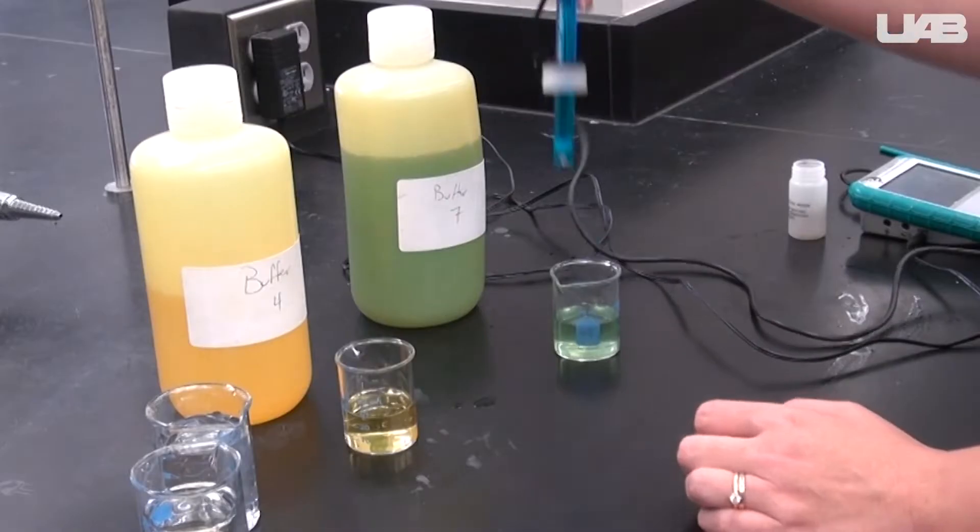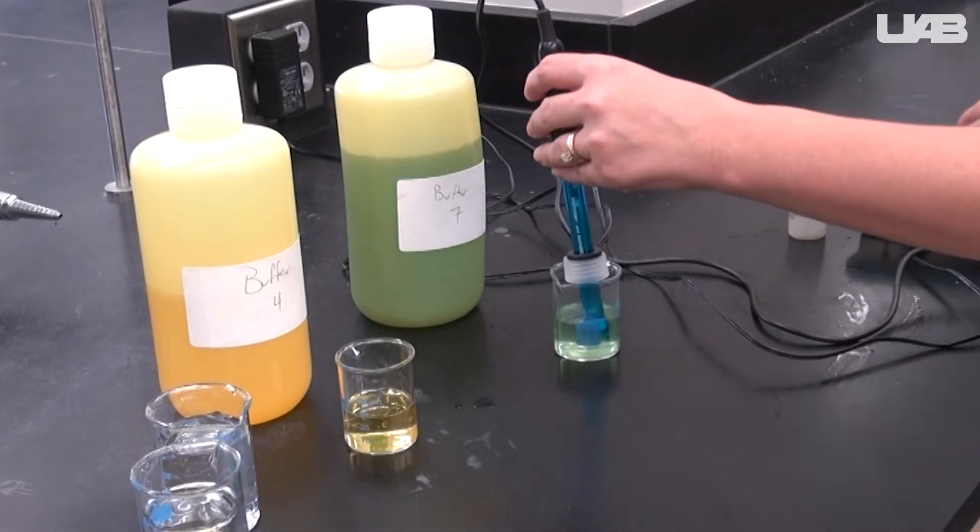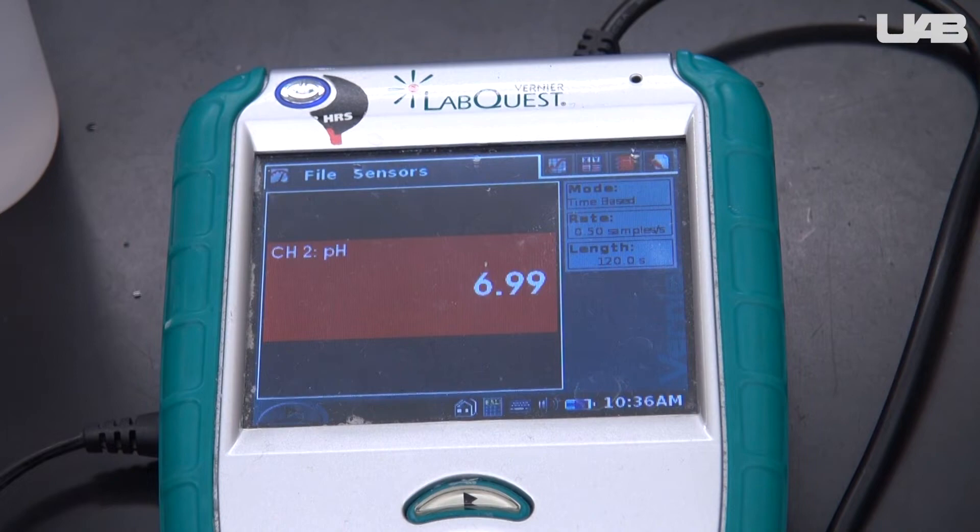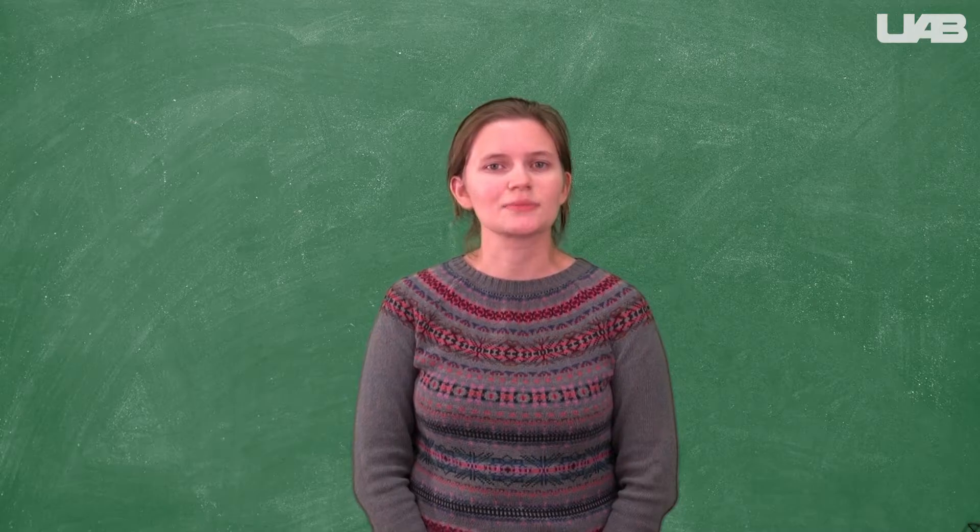Rinse your probe again and place it into the pH 7 buffer to ensure that the meter is now reading the pH correctly. You should see 7 on the screen. You are now ready to begin taking your pH measurements.